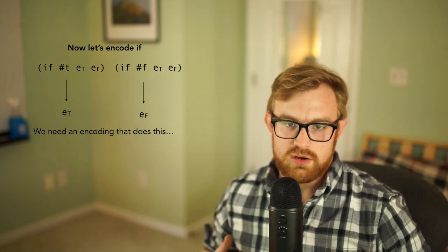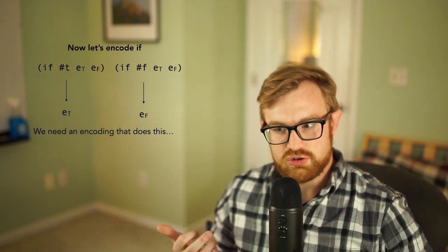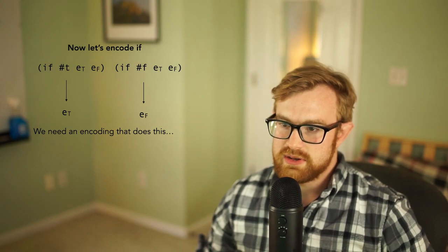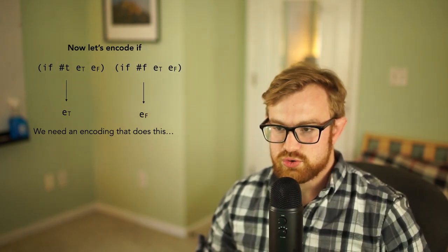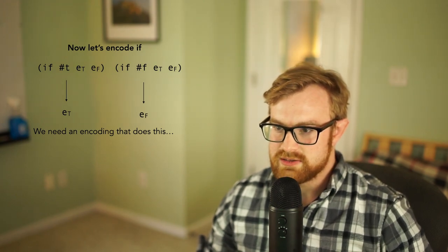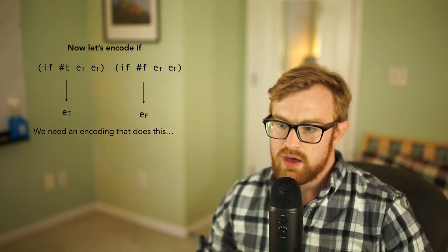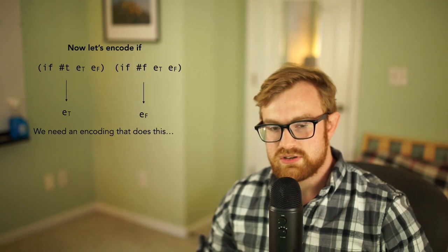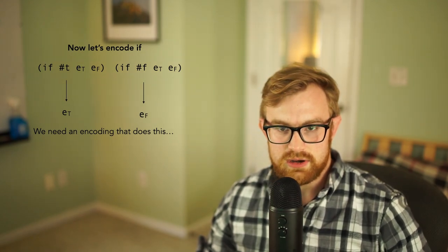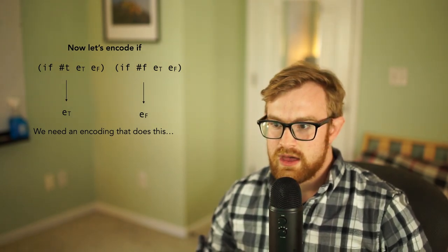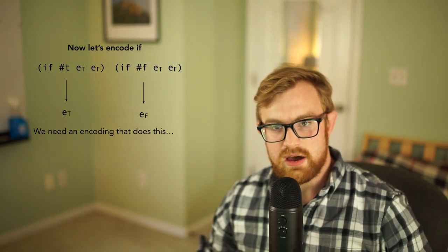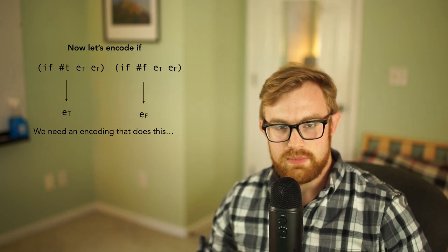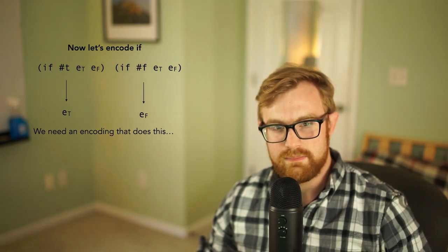I haven't talked to you about how to encode true and false yet, so we need an encoding that does this behavior. So if I do if of true, whatever my encoding for true is, and I do et and ef, well that had better reduce to whatever the encoding of et would end up being. All right, and if I do if of false and I encode all of that and then I do the computational lambda calculus, well that had better implement or that had better end up being whatever ef reduces to. So that's what my encoding needs to do.